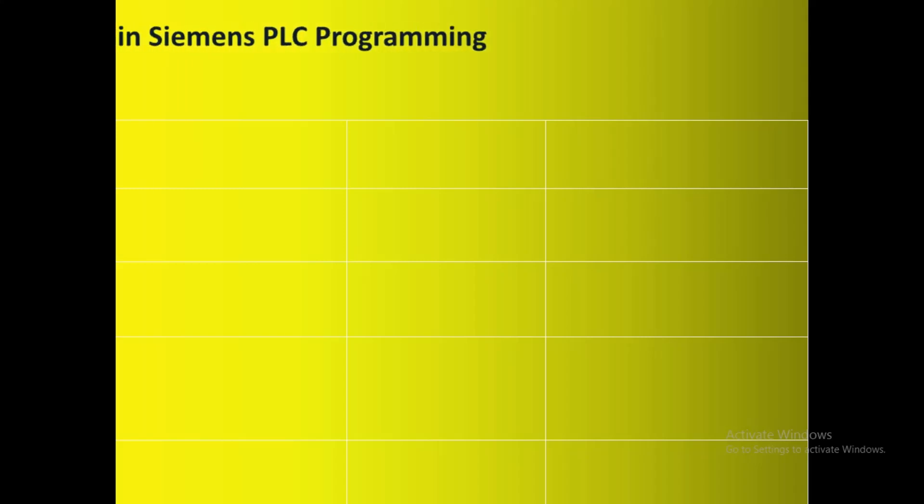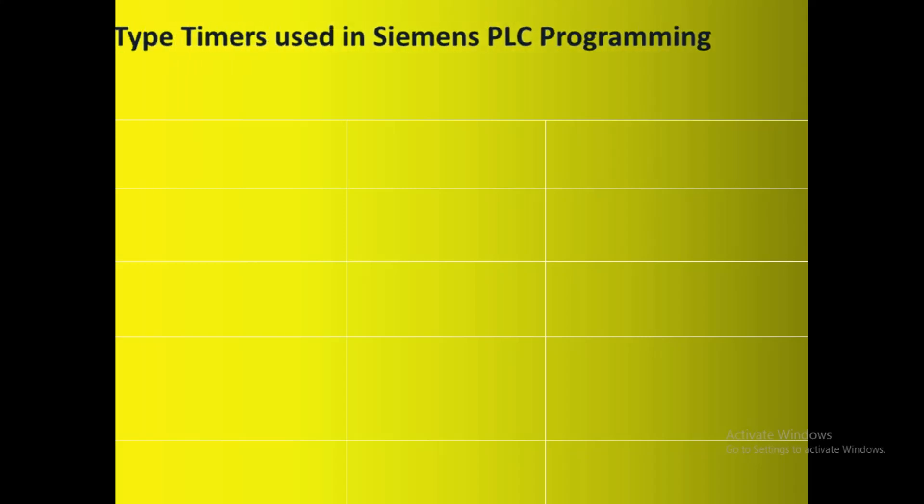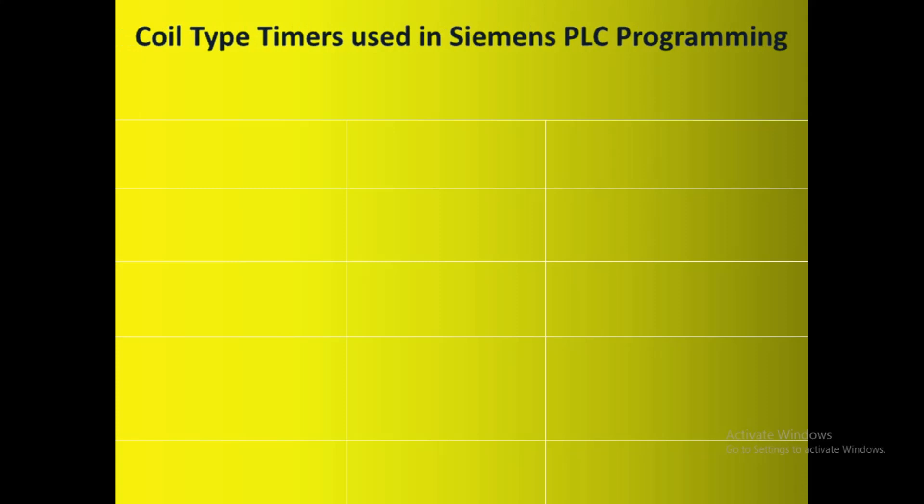Hello everybody, welcome to Instrumentation Training Channel. In today's video, I'm going to discuss different coil type timers used in Siemens PLC programming. Here is a tabular form of different types of coil type timers in Siemens PLC programming.